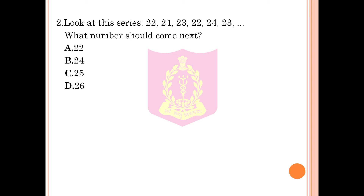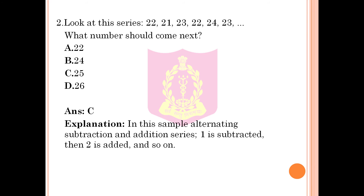Question 2: Look at this series: 22, 21, 23, 22, 24, 23. What number should come next? Option A: 22, Option B: 24, Option C: 25, Option D: 26. The correct answer is Option C, 25. Explanation: In this alternating subtraction and addition series, 1 is subtracted, then 2 is added, and so on.